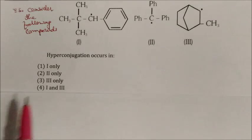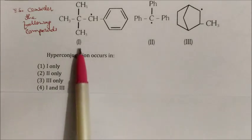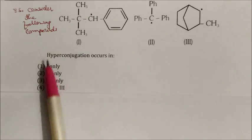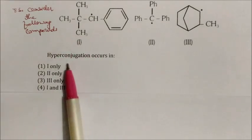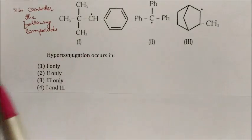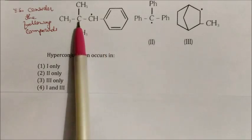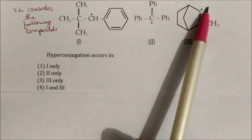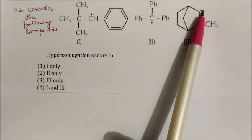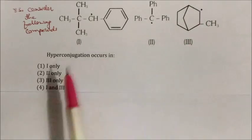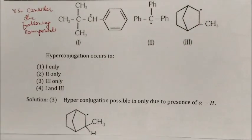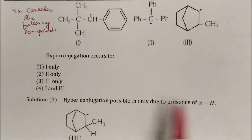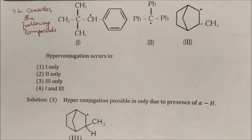Question: Consider three compounds. In which does hyperconjugation occur? Hyperconjugation requires alpha hydrogen atoms adjacent to the pi bond. Compound 1 has no alpha hydrogen. Compound 2 has no alpha hydrogen. Only compound 3 has alpha hydrogen. Answer: only compound 3.